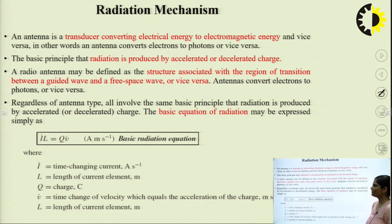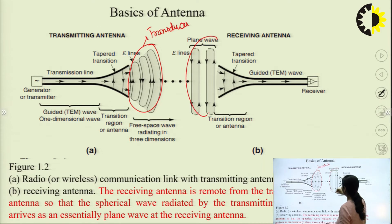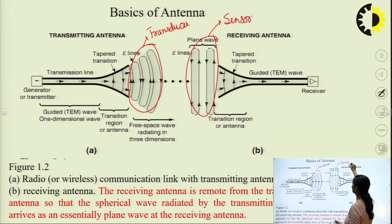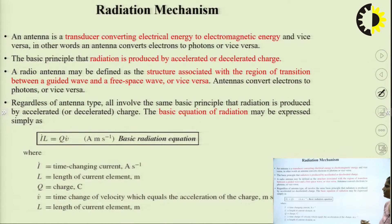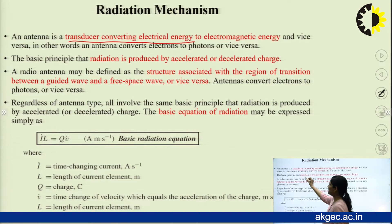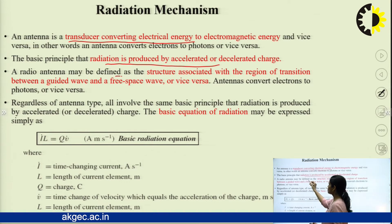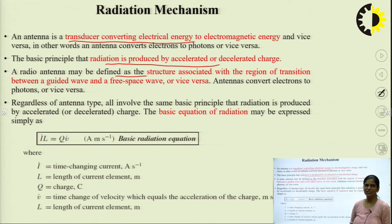The radiation mechanism of the antenna is that when you are sending your signal from transmitter to receiver, it works as a transducer, and at the receiver side it works as a sensor. An antenna is a transducer converting electrical energy to electromagnetic radiation, and at the receiver side electromagnetic waves convert from EM waves to electric current. A radio antenna may also be defined as a structure associated with the region of transition between the guided wave and a free-space wave, or vice versa.